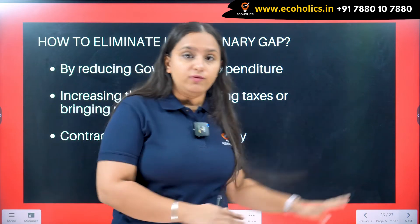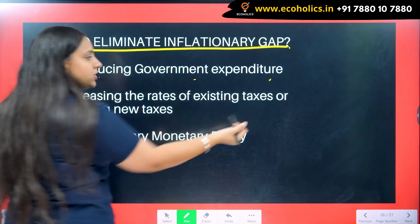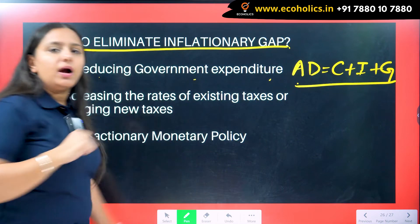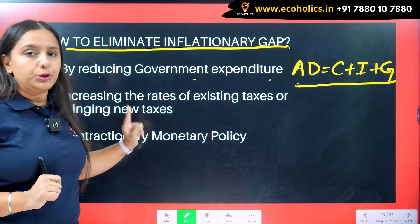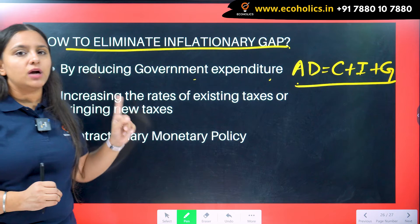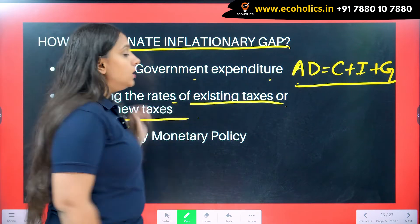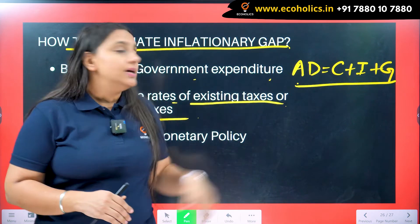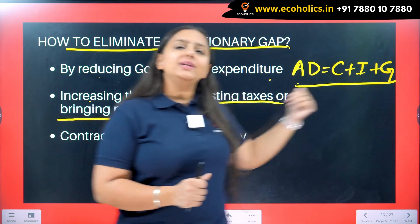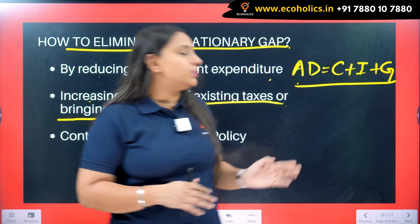Now, how to eliminate inflationary gap? First, by reducing government expenditure — since aggregate demand comprises consumption, investment, and government spending, the government should reduce expenditure. Second, by increasing the rates of existing taxes or bringing new taxes — because when taxes increase, disposable income falls, and as disposable income falls consumption falls. However, the tax revenue should not be spent back into expenditure; instead it should be used for repaying loans or other purposes. This way, taxes reduce disposable income and hence consumption.